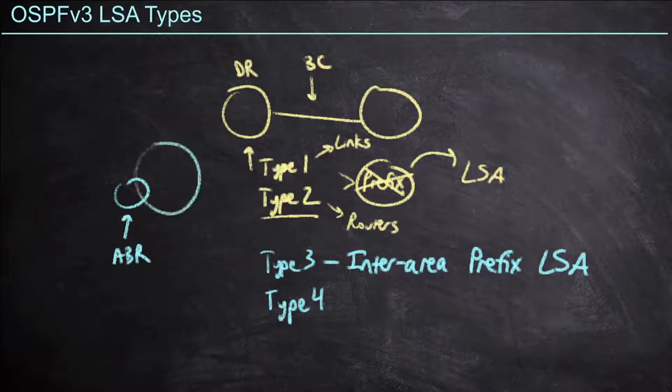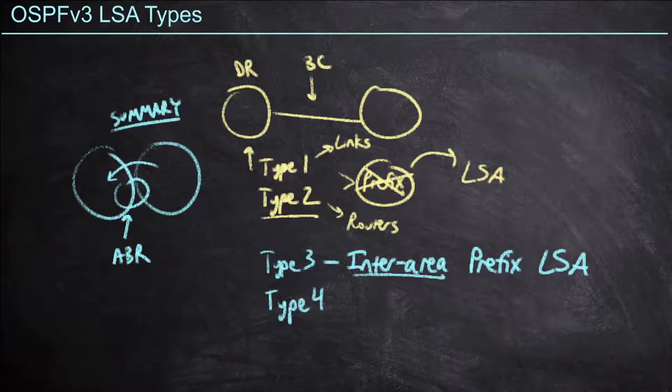That would be a router with a leg in two different areas, and we're going to take information from one and send it into another, hence inter-area communications. In OSPF v2, we called that a summary LSA,